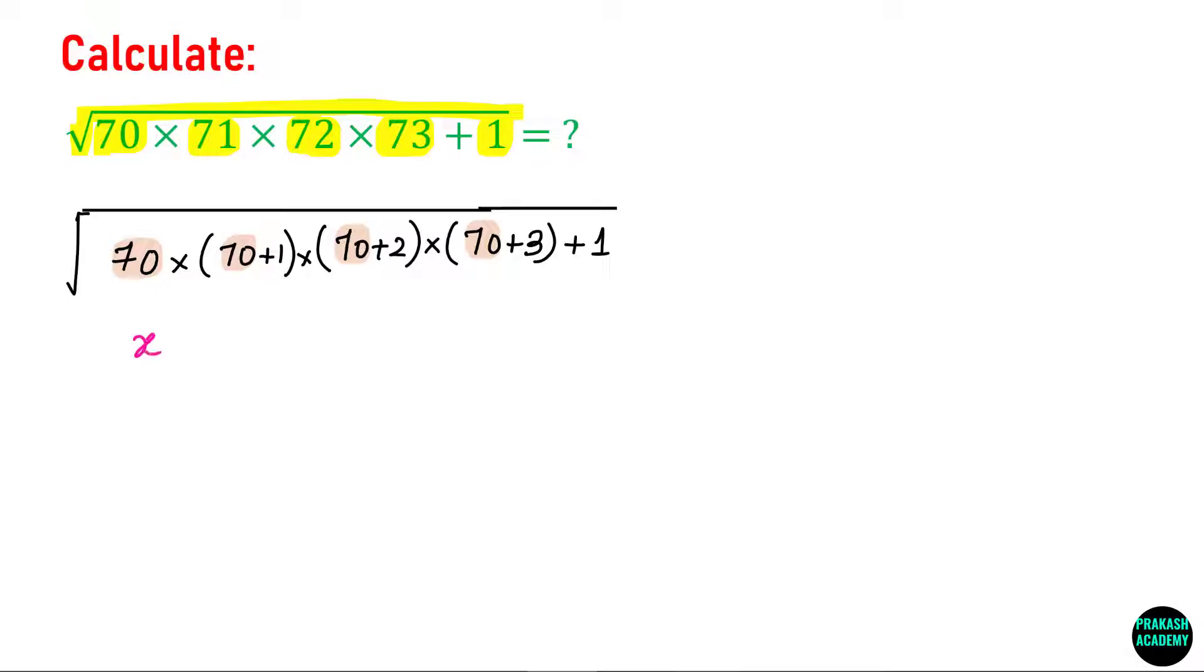We are making a substitution x equals 70 and now let us consider only the term inside this root. In terms of x I can write this is x times x plus 1 times x plus 2 times x plus 3 plus 1. This is the given expression.